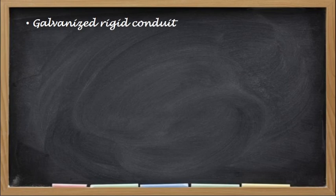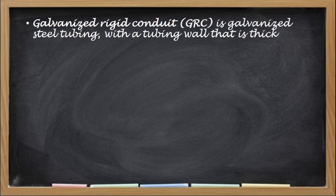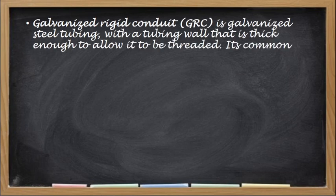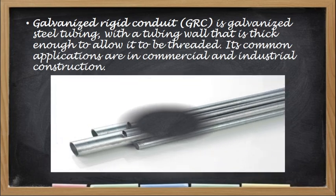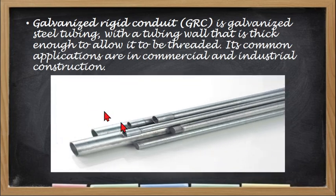Next, we have the Galvanized Rigid Conduit or GRC. It is a galvanized steel tubing with a wall that is thick enough to allow it to be threaded. Its common applications are in commercial and industrial construction. It is the same as RMC except that it is galvanized, meaning it has a high tolerance for corrosive chemicals or corrosive substances in the environment.